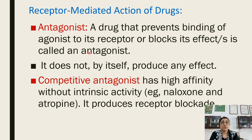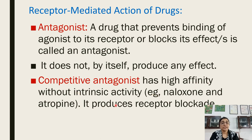An antagonist is a drug that prevents the binding of the agonist to the receptor site and blocks the effect of the agonist. Antagonist doesn't have its own pharmacological effect — it only blocks the action of the agonist. A competitive antagonist has high affinity toward the receptor without any intrinsic activity. Examples are analogs and atropine, which produce their effect by blocking the receptor.